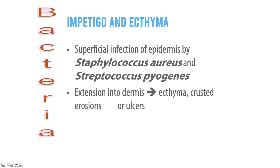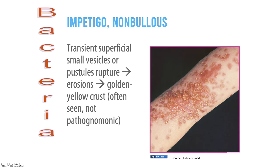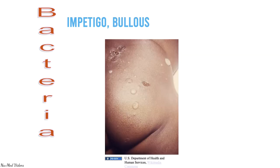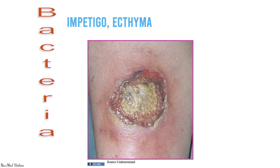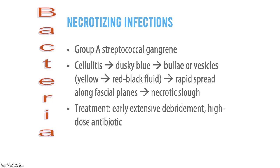Impetigo and ecthyma are superficial infections of the epidermis by Staph aureus and Streptococcus pyogenes. Extension into the dermis causes ecthyma with crusted erosions or ulcers. Non-bullous impetigo presents as transient superficial small vesicles or pustules that rupture to cause erosions with golden-yellow crust. Bullous impetigo can also occur. Topical mupirocin is highly effective against staph and other organisms; systemic antimicrobials like penicillin, dicloxacillin, or erythromycin may be needed.